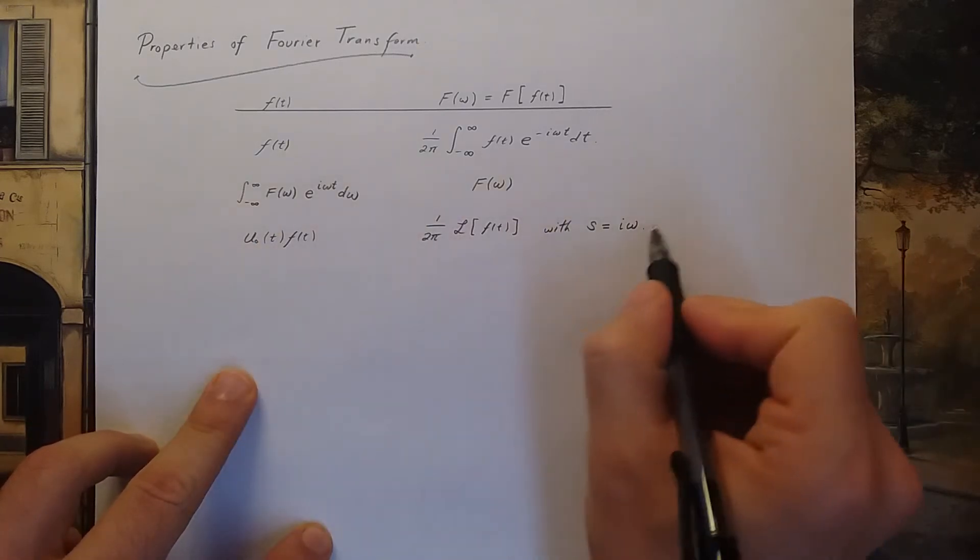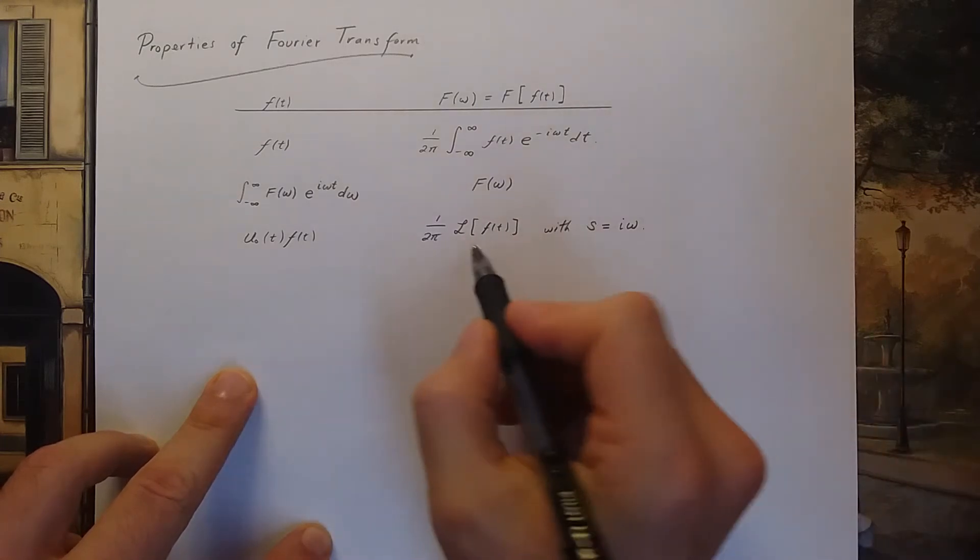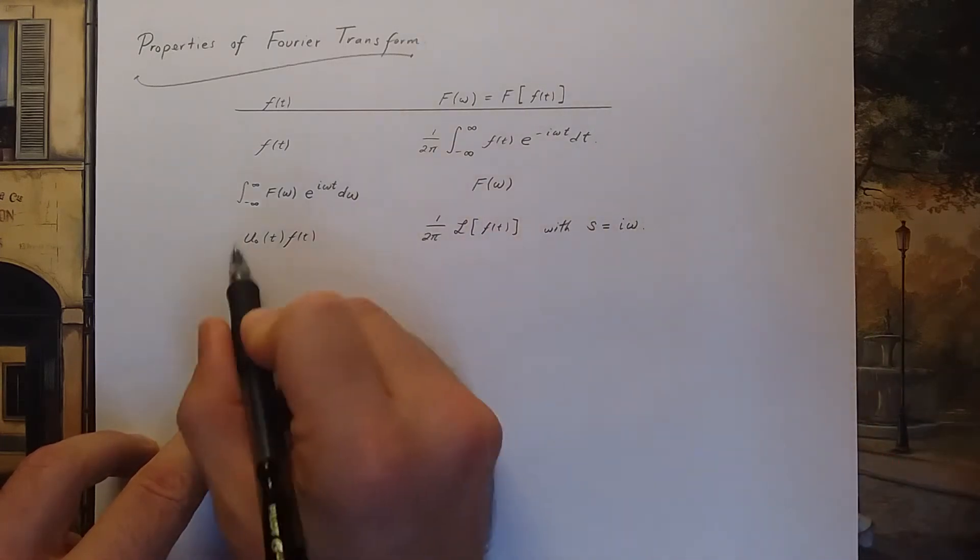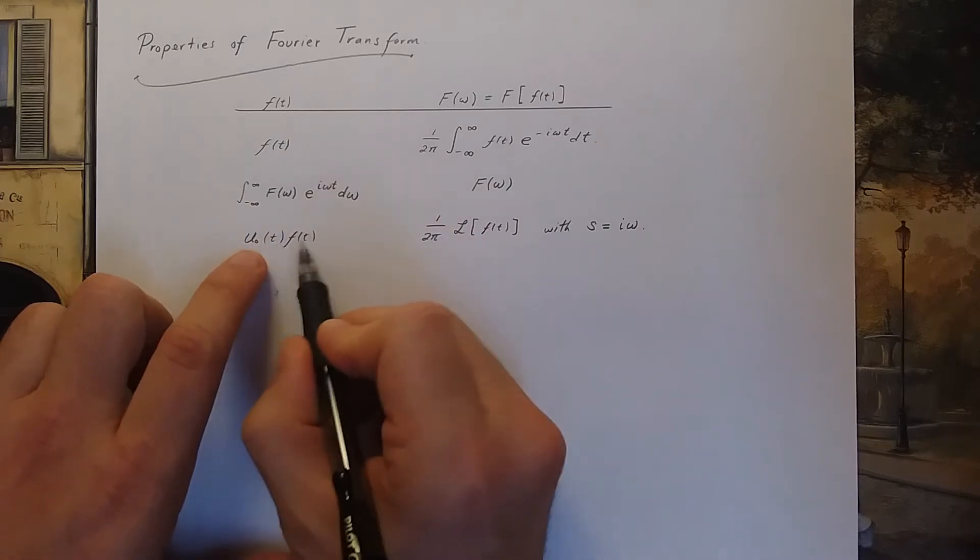Since we've already discovered a lot of Laplace transforms earlier in our course, the Laplace transform table for example, you can use that information to take the Fourier transform of functions of this type.